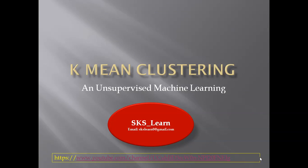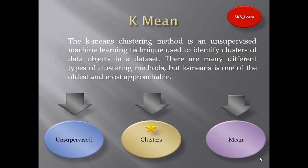Believe me guys, this is very easy. So let's see what K-means actually is. The K-means clustering method is an unsupervised machine learning technique used to identify clusters of data objects in a database. There are many different types of clustering methods, but K-means is one of the best, oldest, and most approachable techniques.